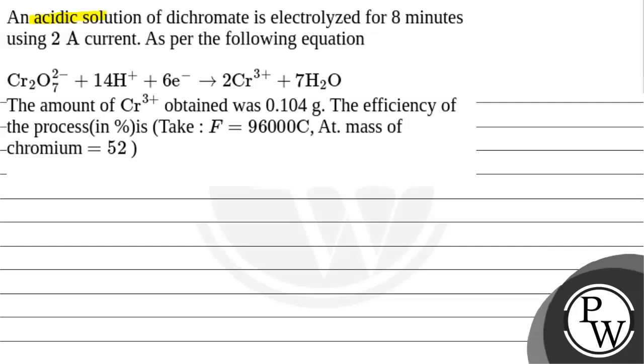Hello bachos, let's read this question. An acidic solution of dichromate is electrolyzed for 8 minutes using 2 ampere current. As per the following equation: Cr2O7^2- + 14H+ + 6e- → 2Cr^3+ + 7H2O.